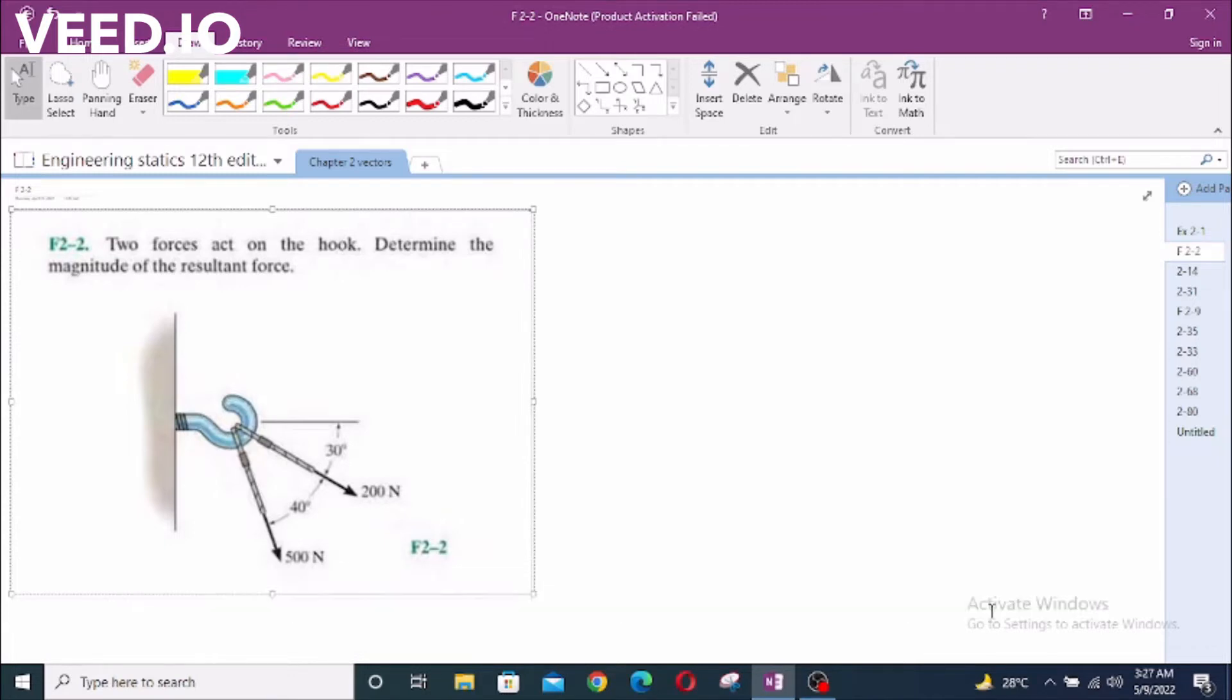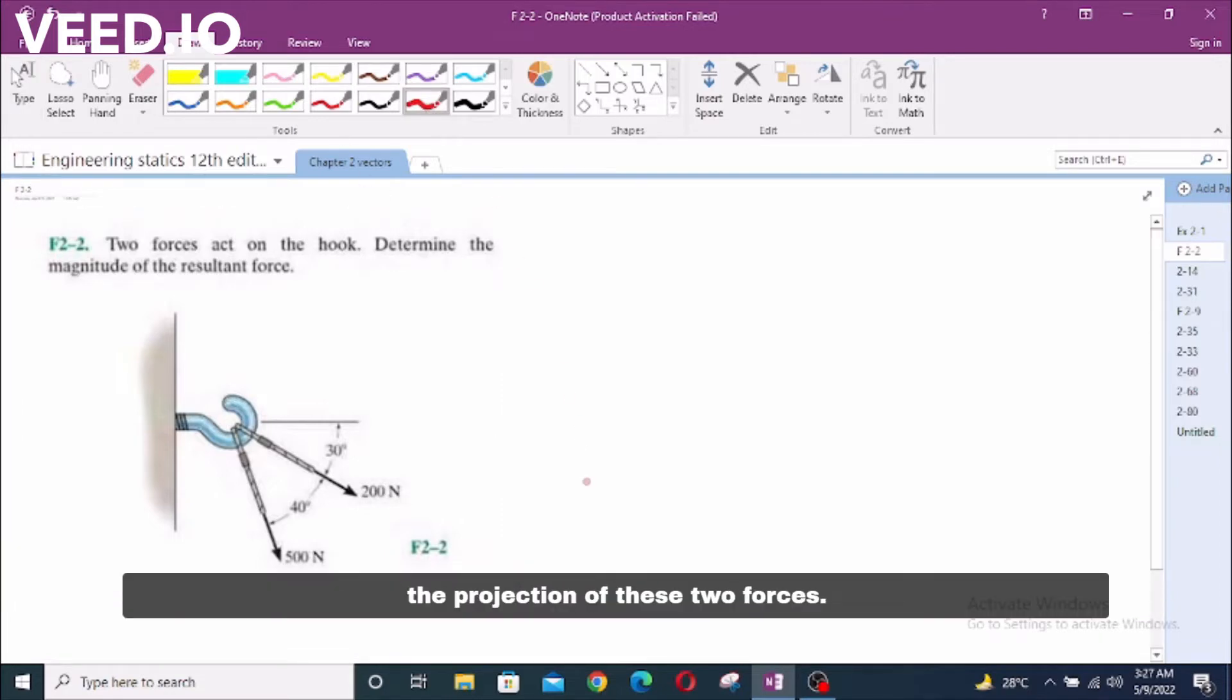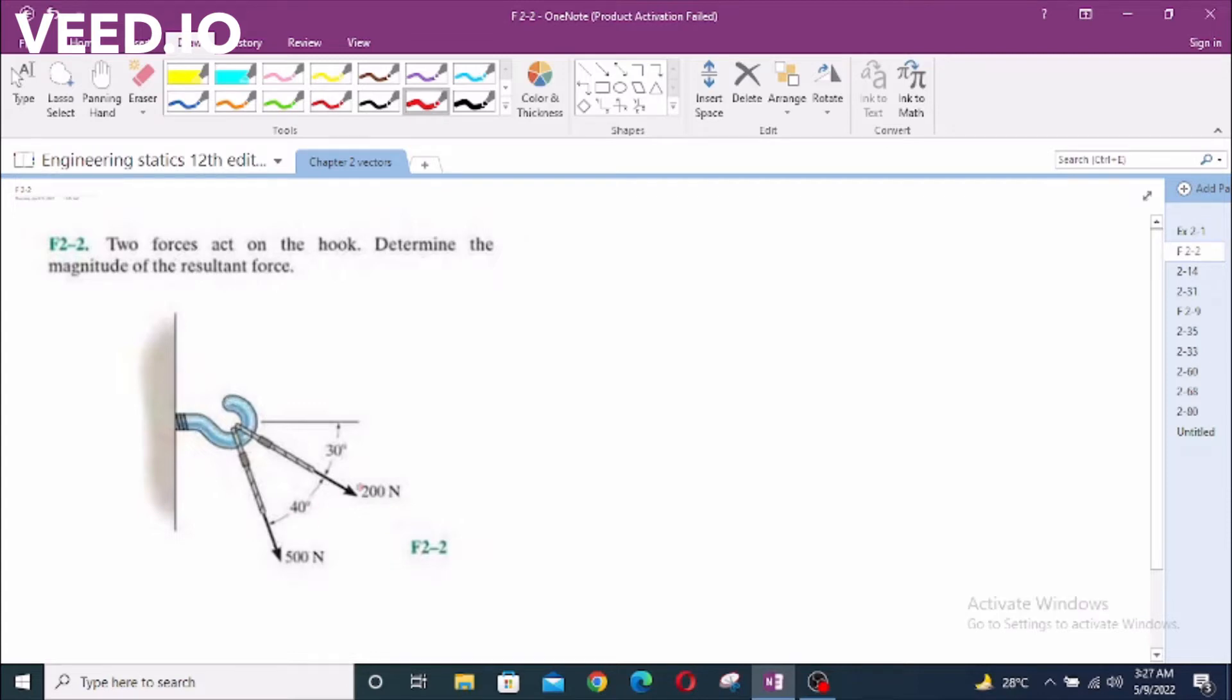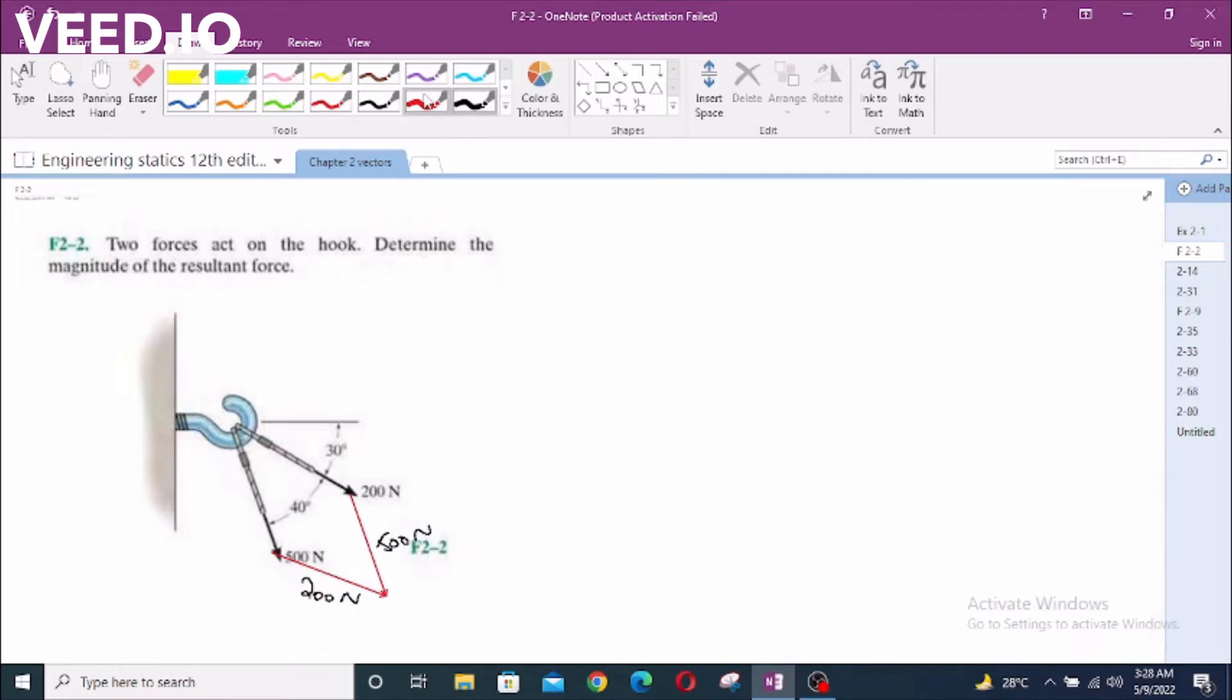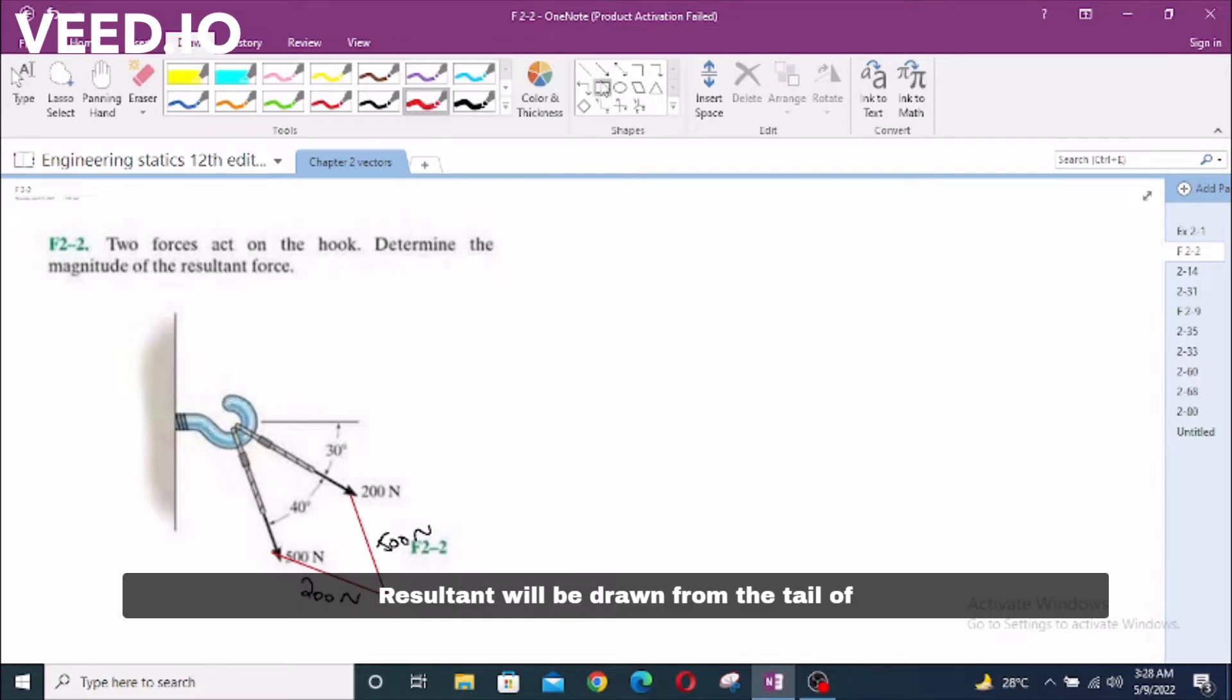We are going to solve this problem by using parallelogram law. For that, we need to draw the projection of these two forces. This vector represents 500 Newton force and this vector represents 200 Newton force. Resultant will be drawn from the tail of these two vectors to the opposite end.